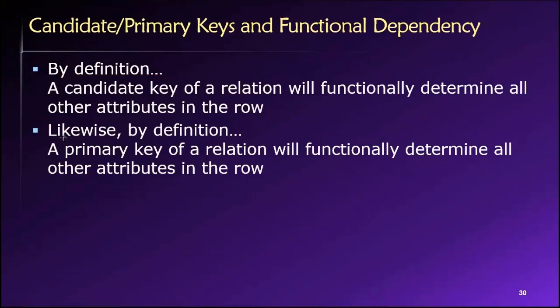And of course, because a primary key is a candidate key that has been elevated to the status of primary key, all primary keys also follow this rule. That is, a primary key can only be a primary key if it functionally determines all other attributes in the row.